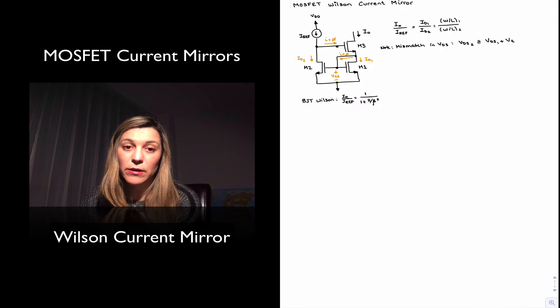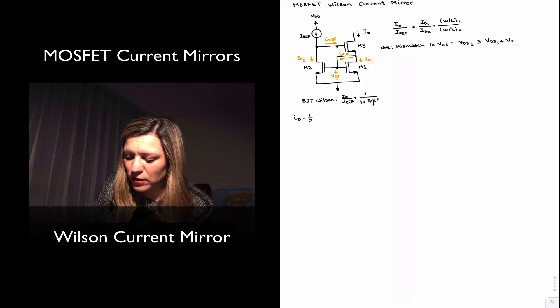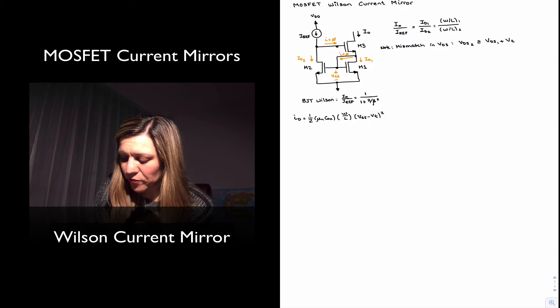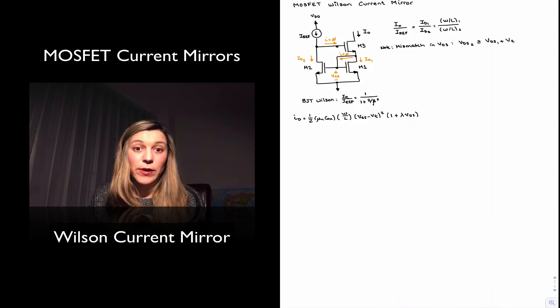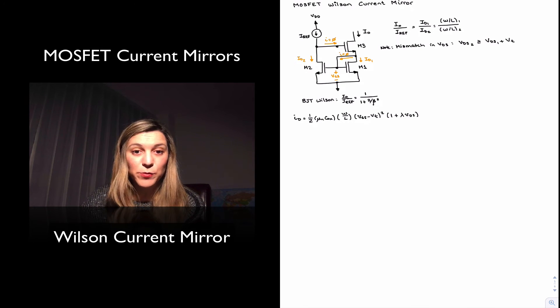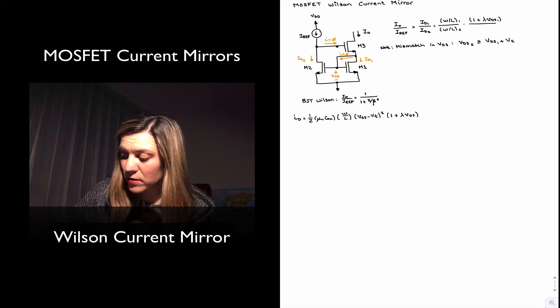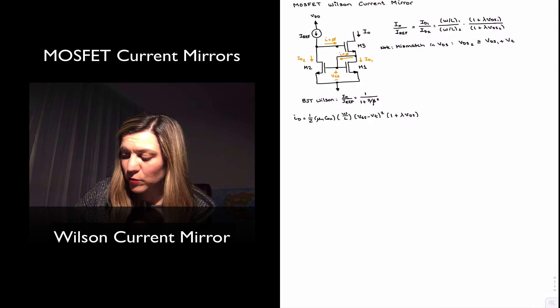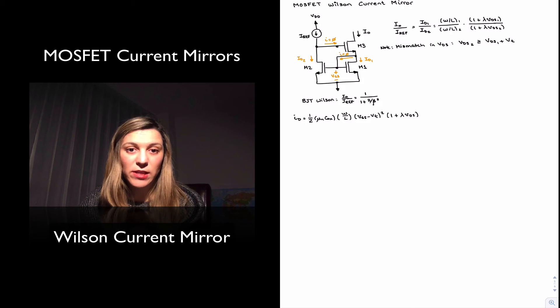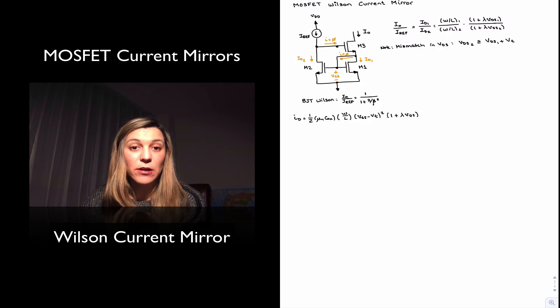If we want to take into account the finite output resistance of the transistor, then we need to write the equation for the current in saturation as one half of mu N C oxide with our length VGS minus VT squared times one plus lambda times VDS. And so then if we write ID1 over ID2 and we account for different values of VDS and different values of aspect ratio, then the ratio of the two would be the ratio of aspect ratios times one plus lambda VDS1 divided by one plus lambda VDS2. And we can safely assume that the lambdas are equal if the transistors are matched, but because of the way they are connected, the VDSs won't be matched. And so there is what we call a systematic error introduced by the construction of the circuit, the VDSs are not matched.